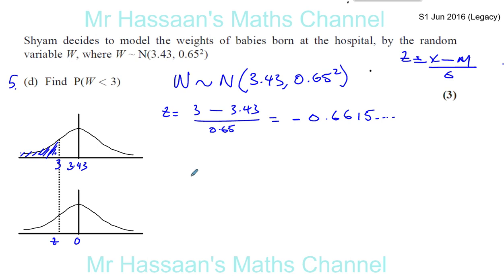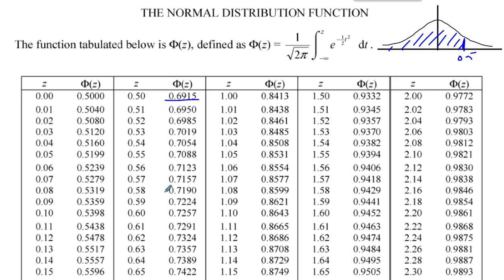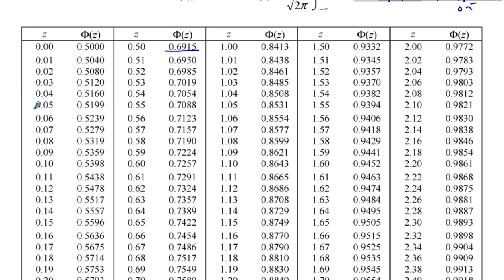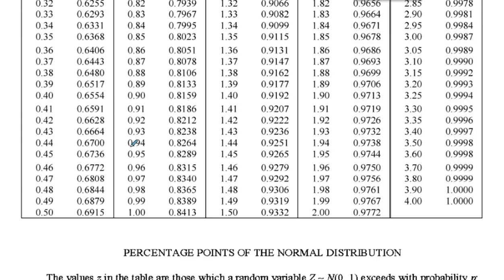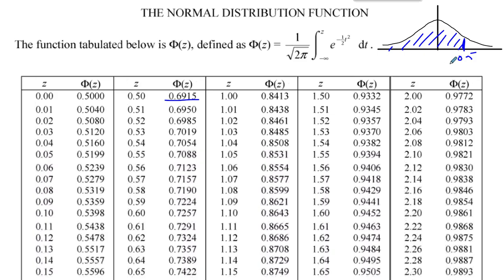So the Z value is minus 0.6615. We want to find the probability that W is less than 3, which equals the probability that Z is less than negative 0.6615. Now, looking at the table, we notice there are no negative Z values — all Z values in the table are positive.